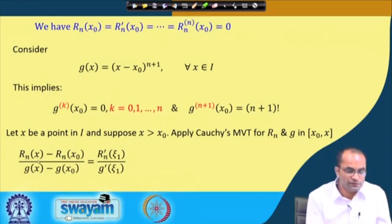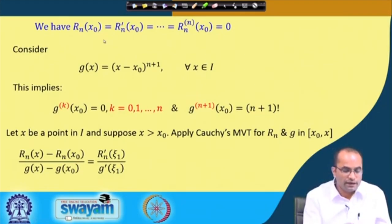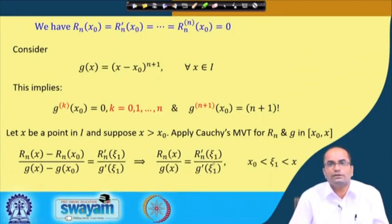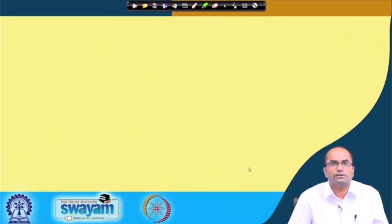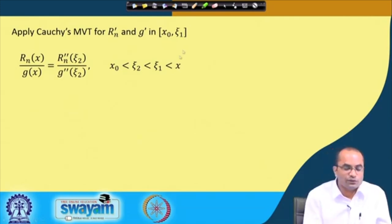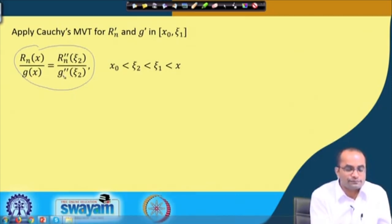Taking a point x in the interval with x > x₀, we apply the Cauchy mean value theorem to R_n and g on [x₀, x]. The theorem gives [R_n(x) − R_n(x₀)] / [g(x) − g(x₀)] = R_n′(ξ₁) / g′(ξ₁) for some ξ₁ in (x₀, x). Since R_n(x₀) = 0 and g(x₀) = 0, we get R_n(x)/g(x) = R_n′(ξ₁)/g′(ξ₁). Applying Cauchy MVT again on the derivatives in [x₀, ξ₁], we get R_n(x)/g(x) = R_n″(ξ₂)/g″(ξ₂).